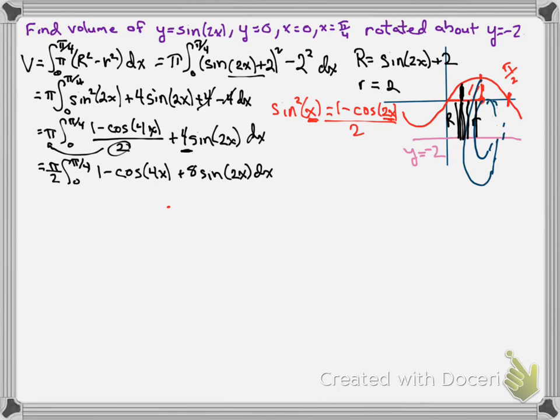We are now ready to take our antiderivative. So we have the pi over 2 still out front. The antiderivative of 1 is just x. The antiderivative of cosine of 4x is sine of 4x over 4. We're undoing the chain rule. So if we were taking the derivative we'd have to multiply by 4. Taking the antiderivative, we divide by 4. Now we have plus 8. Similarly, the antiderivative of sine is negative cosine of 2x over 2 dx.